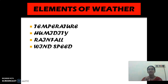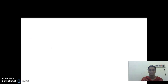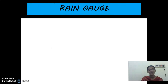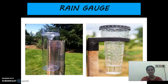What are all the elements of weather? Temperature, humidity, rainfall and wind speed. What is the instrument used to measure the amount of rainfall? Rain gauge. Very good. Rainfall is measured by an instrument called rain gauge.